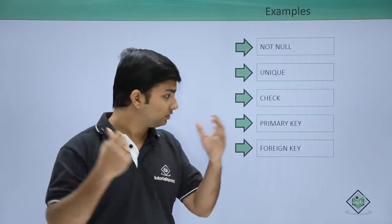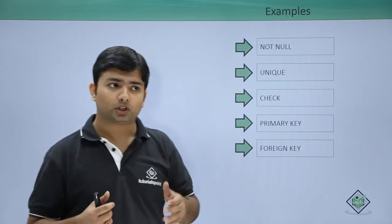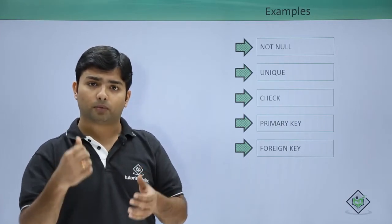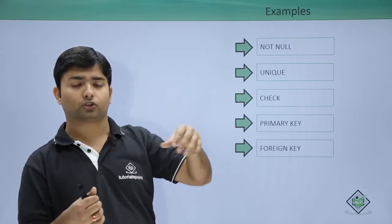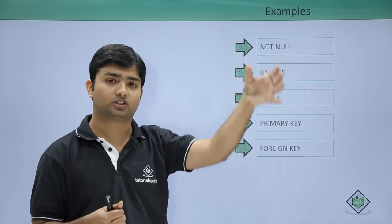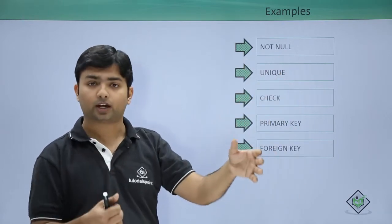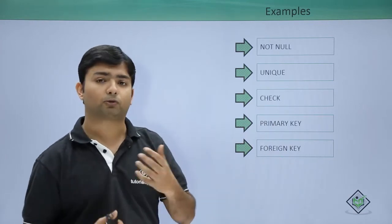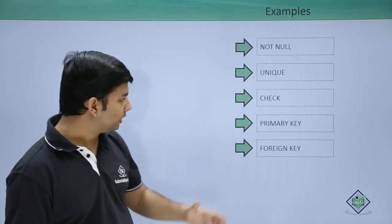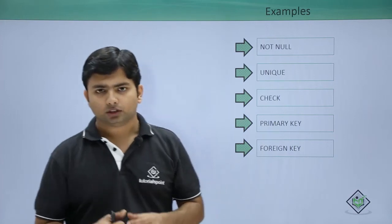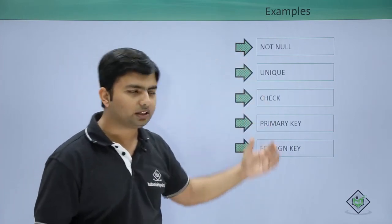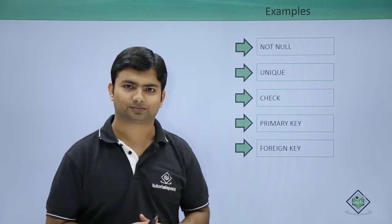So this referential integrity will ensure that any employee which is getting added in the employees table must be in a department which is already there in the departments table. If we try to enter the department which doesn't exist in the departments table, that will not be taken. So this can be done by the FOREIGN KEY. In our next video onwards, we will start implementing all these constraints one by one.